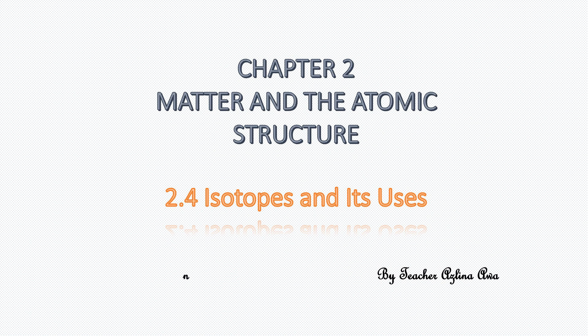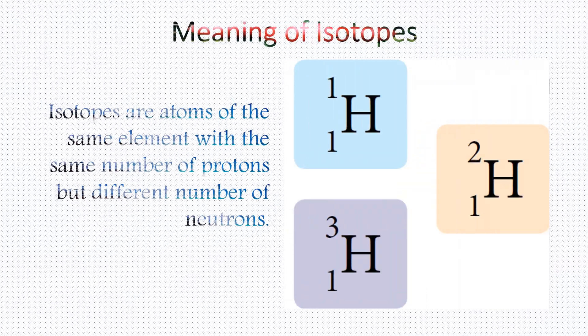Hello and Assalamualaikum. This video is about Matter and the Atomic Structure, Subtopic 2.4: Isotopes and its uses. Before we proceed, we have to know the meaning of isotope. Isotopes are atoms of the same element with the same number of protons but different number of neutrons.